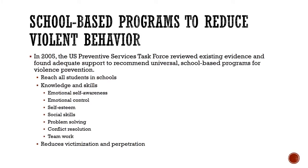In 2005, the U.S. Preventive Services Task Force reviewed existing evidence and found adequate support to recommend universal school-based programs for violence prevention. A universal school-based program is one that reaches all students in schools, as opposed to those that target specific students. Programs found to be effective are those that target specific knowledge and skills, including emotional self-awareness, emotional control, self-esteem, social skills, problem-solving, conflict resolution, and teamwork. The existing evidence has found that these types of school-based programs reduce both victimization and perpetration of violence among youth.